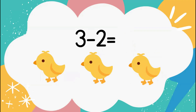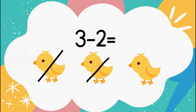Now let's take a look at this problem. I want you to read it with me: 3 minus 2 equals. We have 3 chicks and we're going to subtract 2 chicks to see how many we have left over. Let's cross off 2 — count with me: 1, 2. Good job. How many are remaining? We have 1 chick left. So 3 minus 2 equals 1.